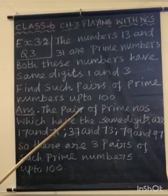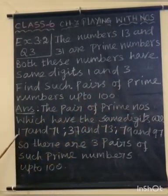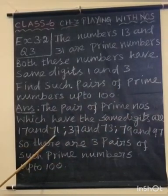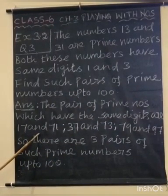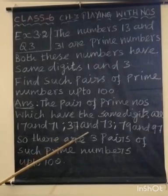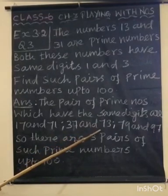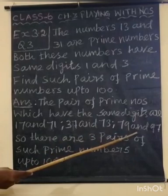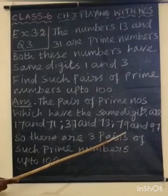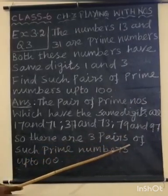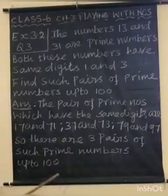The pairs of prime numbers which have the same digits are 17 and 71. Here the same digits 1 and 7. Next, 37 and 73. Here the same digits 7 and 3. Next, 79 and 97. Here the same digits 9 and 7. So there are 3 pairs of such prime numbers up to 100.